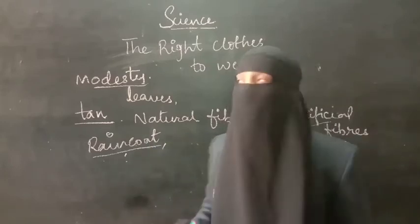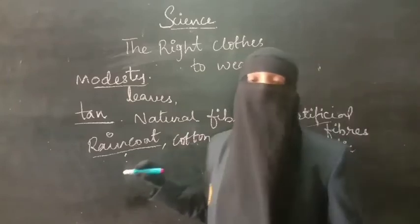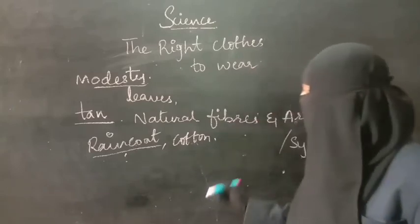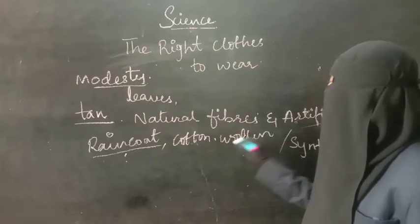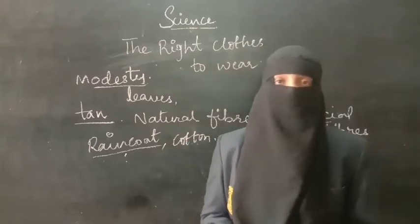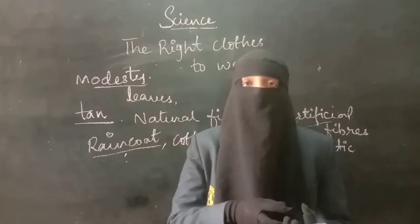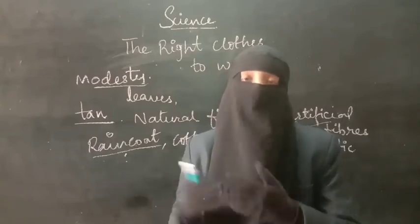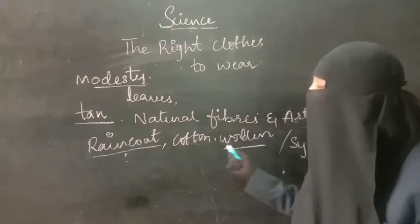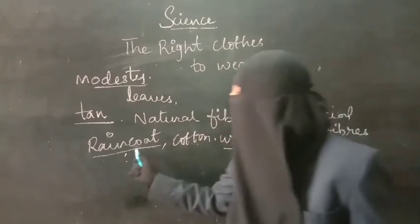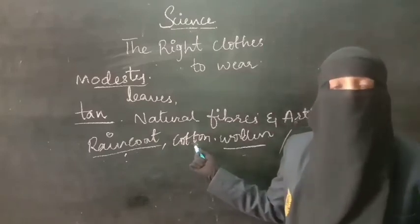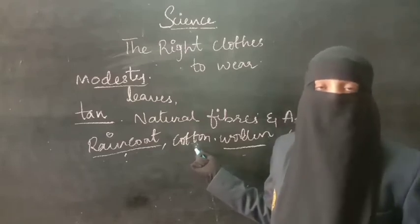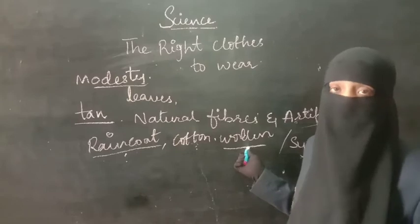Cotton dresses are used in the summer season because we feel comfortable and cool when wearing cotton. In winter, we wear woolen clothes. Woolen clothes protect us from the cold — they trap heat inside them. As long as the heat is held inside, we won't feel cold from our surroundings. So different clothes are used in different seasons: raincoat in rainy season, cotton in summer, and woolen clothes in winter.